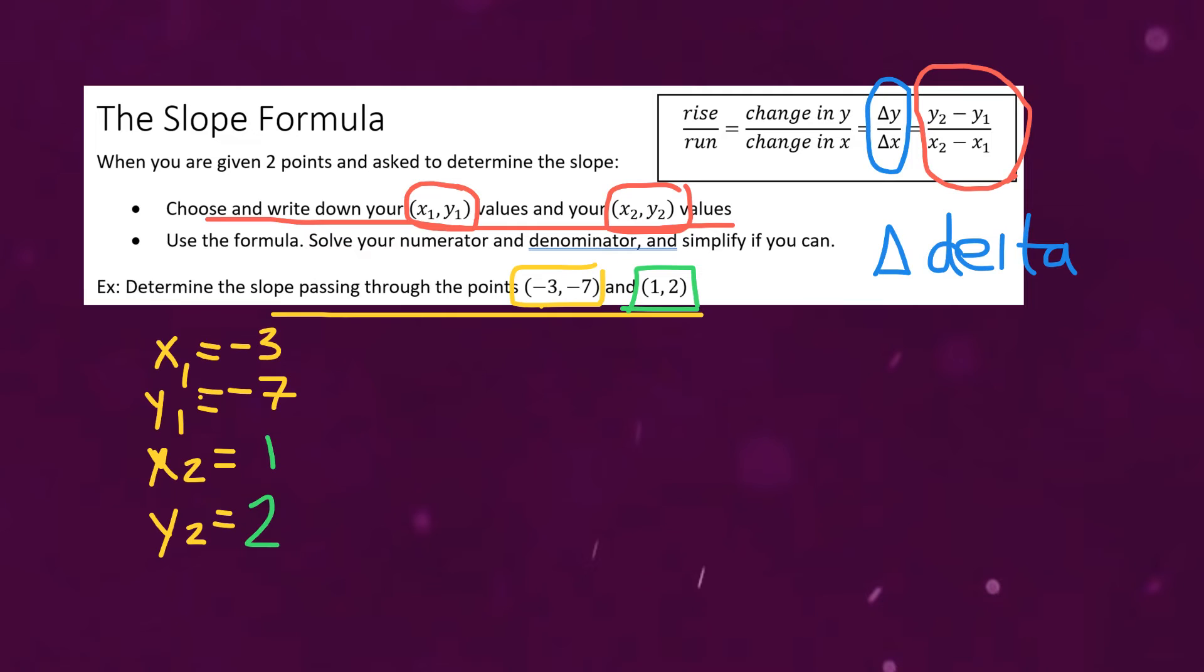All right now for the last step we're going to use the formula. So it's y2 minus y1 divided by x2 minus x1. Okay so we know that y2 has a value of two we just wrote that down over here and y1 has a value of negative seven. So it's actually going to be two minus negative seven when we write it out here. That's going to be over x2. Now x2 has a value of one and we're going to be subtracting x1 which is a value of negative three. So I'm going to put in brackets like this.